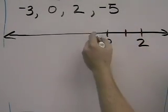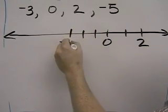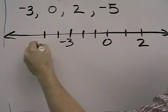And then 2 would be right there and negative 1, 2, 3, negative 3, negative 4, negative 5 would be right there.